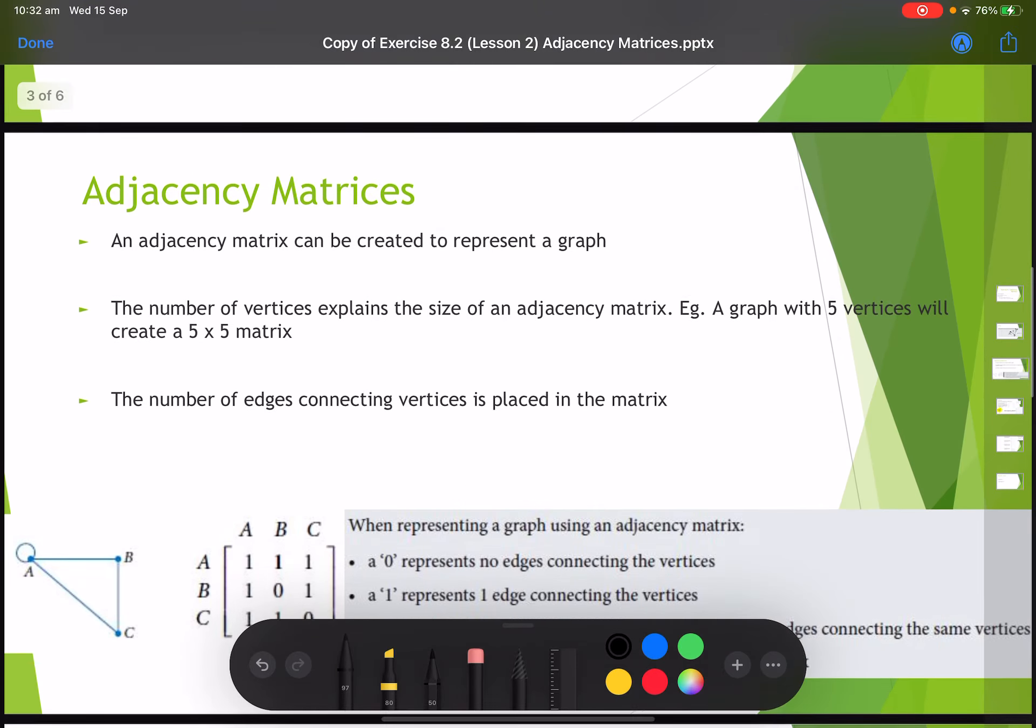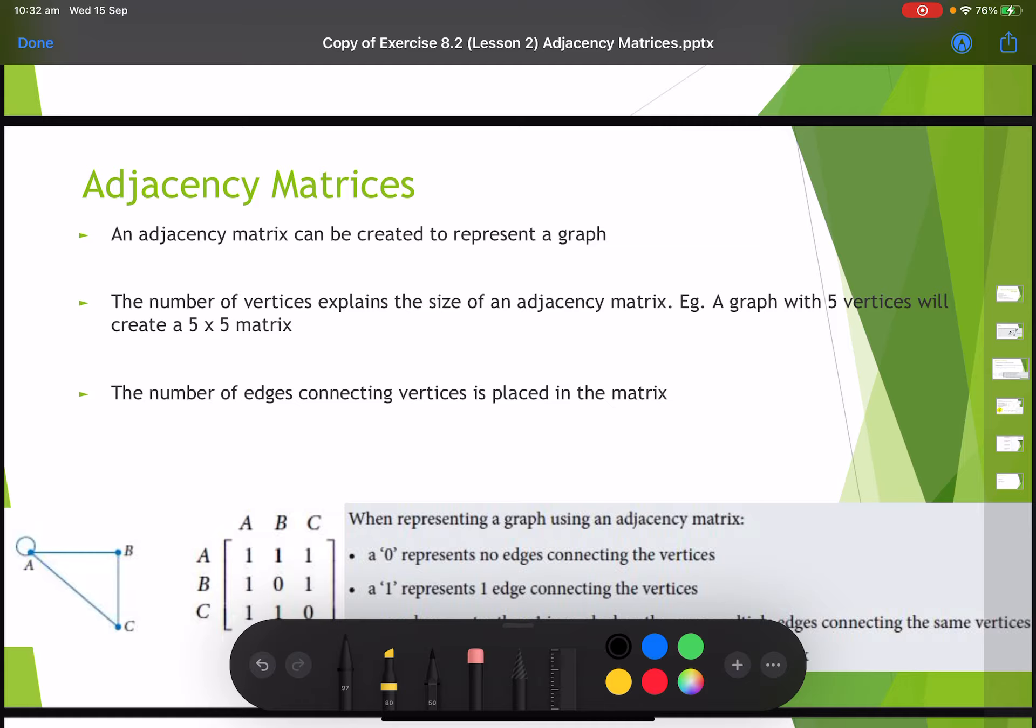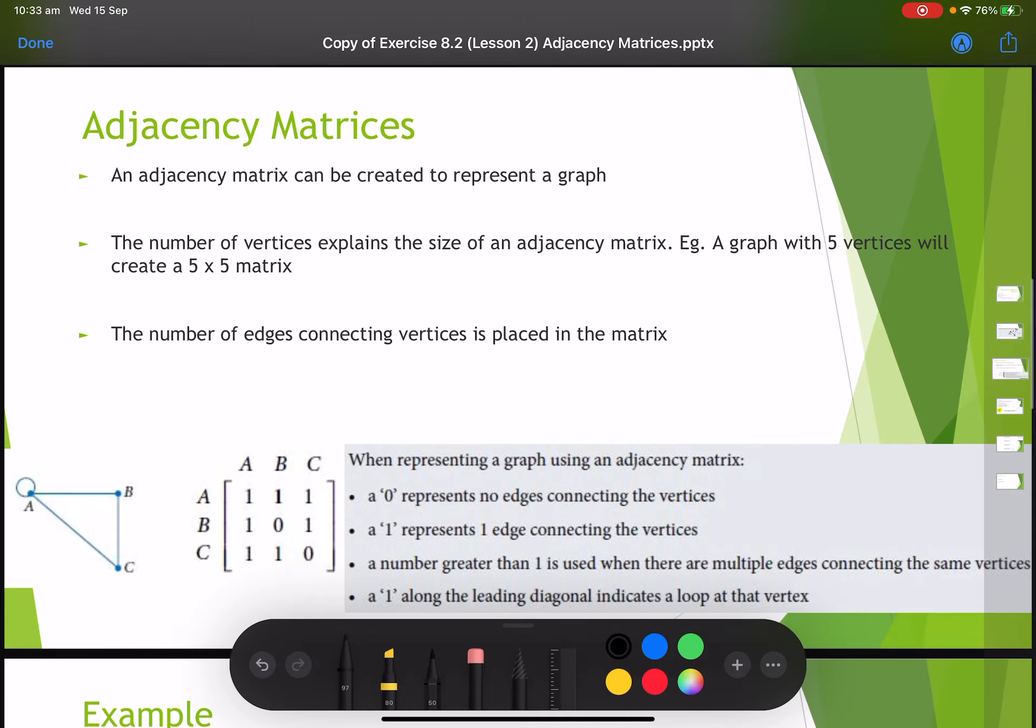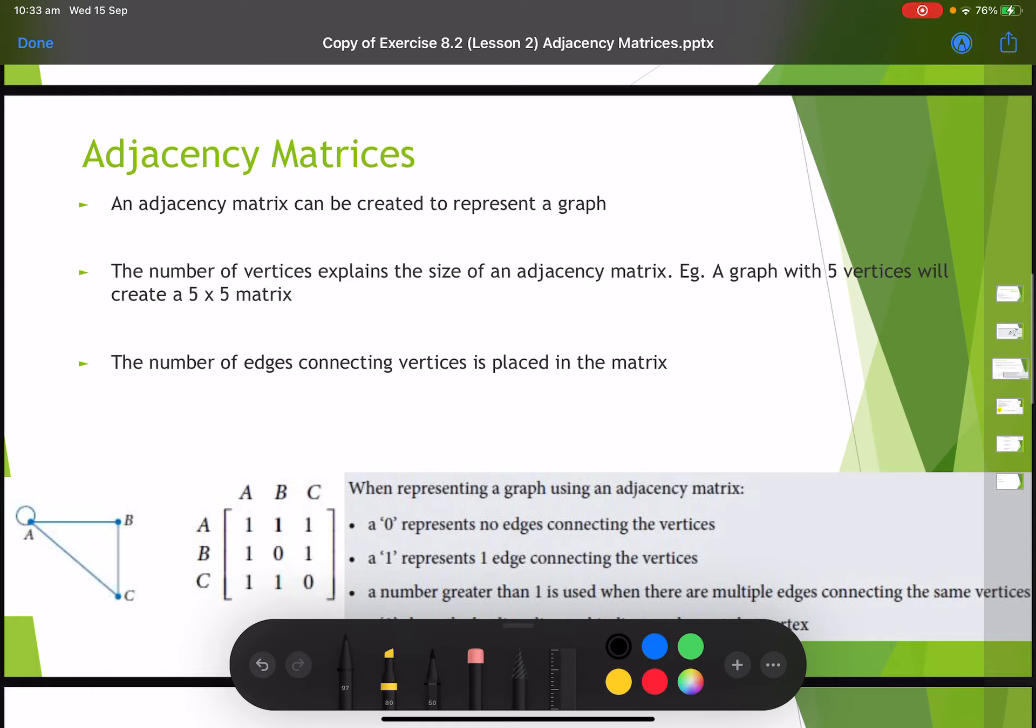In terms of adjacency matrices, for any graph that has a certain number of vertices we can represent it using an n by n matrix. So if it has five vertices it is going to have a five by five matrix, where we have five rows and five columns. Remember the first number represents rows, the second number represents columns. The thing that we're including inside the adjacency matrix is all of the number of edges that connect each vertex.